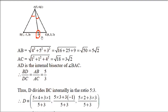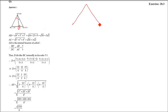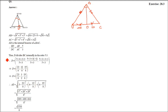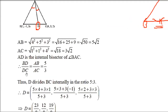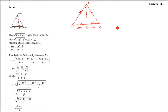Then AC you can also find out. Now AD is the internal bisector. There is a property that whenever we have an internal bisector of an angle, the point it touches on the opposite side — the ratio of that division is equal to the ratio of the sides holding the angle. That is, BD by DC equals AB by AC.